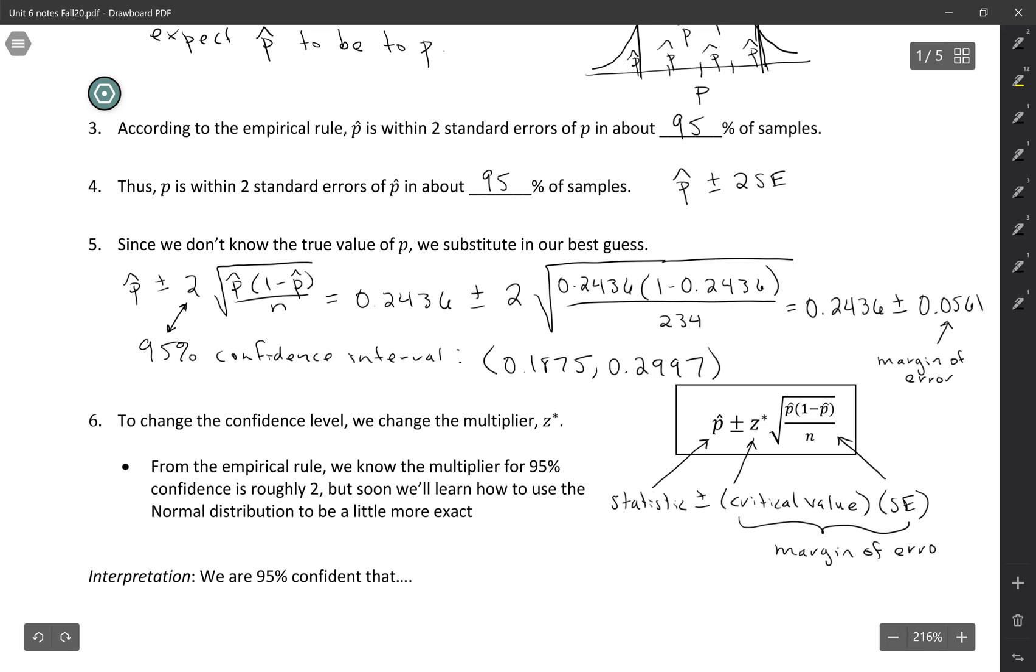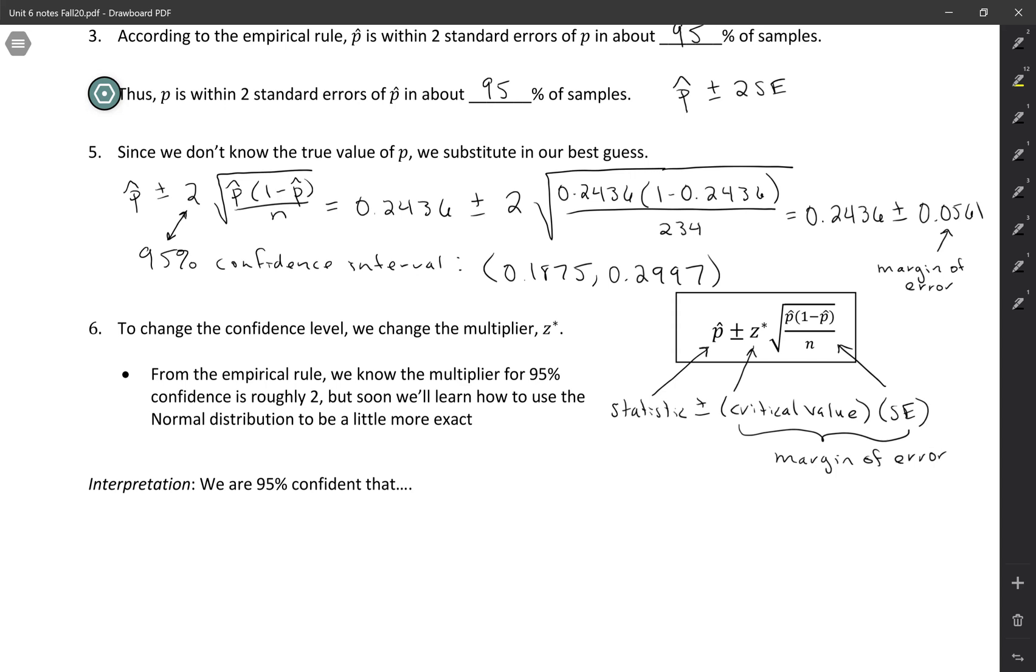So those are two ways of expressing the formula for the confidence interval. And then when we interpret, we're thinking about it as a range of reasonable values for the population parameter. So we always want to describe the population parameter in context.